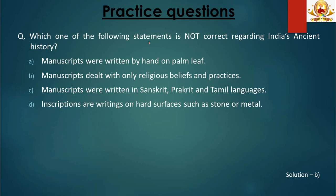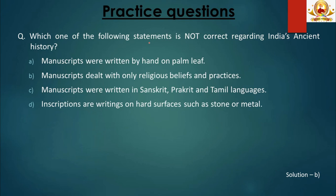Question 4: Which statement is not correct regarding India's ancient history? A: Manuscripts were written by hand on palm leaf. B: Manuscripts dealt with only religious beliefs and practices. C: Manuscripts were written in Sanskrit, Prakrit and Tamil languages. D: Inscriptions are writings on hard surfaces such as stone or metal. Statement A is correct — manuscripts were written by hand on palm leaves. Statement B is incorrect — we discussed that manuscripts dealt with all kinds of subjects ranging from religious to secular. So B is our answer, as it is the incorrect statement.